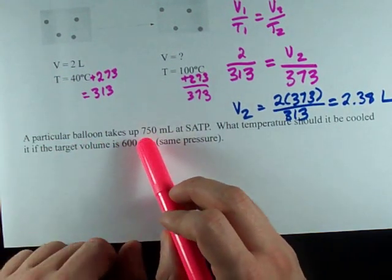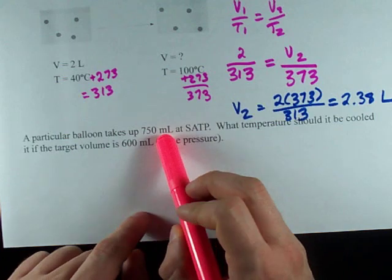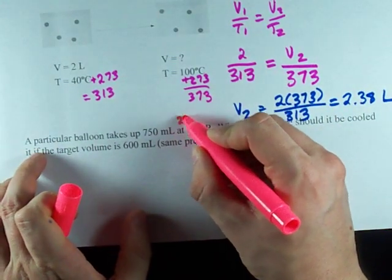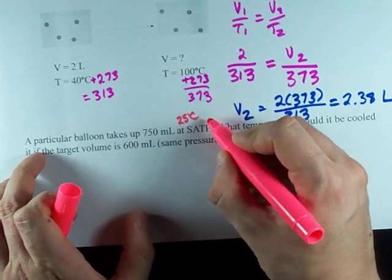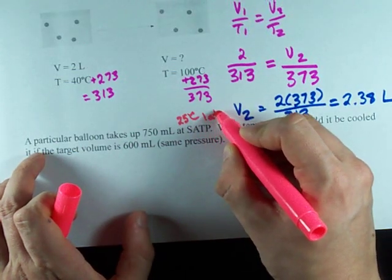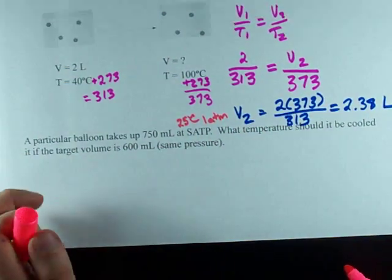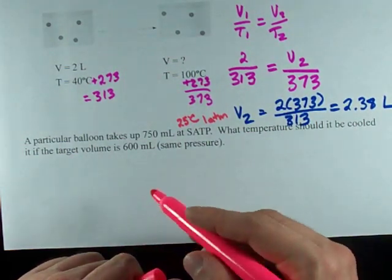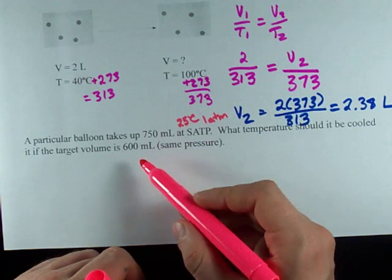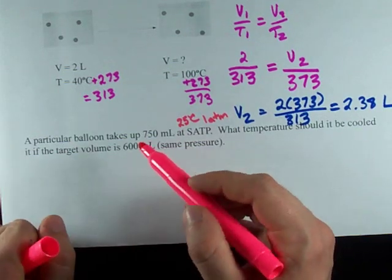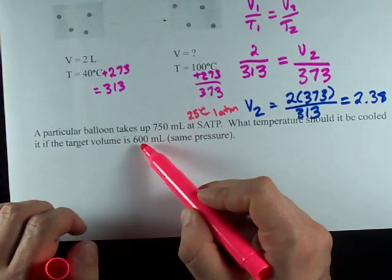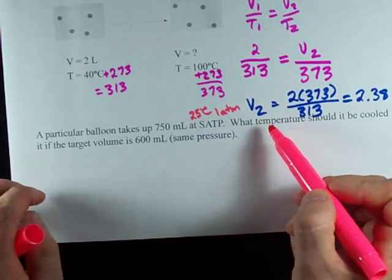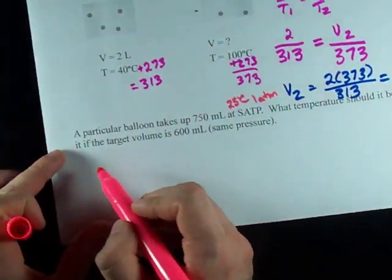Let's use pink. A particular balloon takes up 750 milliliters at SATP. Now SATP is 25 degrees Celsius and about 1 atmosphere of pressure. What temperature should it be cooled to if the target volume is 600 milliliters? So I've been given my initial volume and my final volume, my initial temperature, and they're asking for the final temperature.